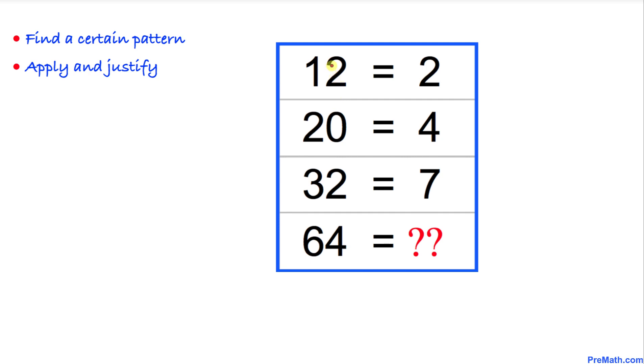So let's look at the very first row on the top. 12 could be written as 4 times 3, 20 could be written as 4 times 5, 32 could be written as 4 times 8, and finally 64 could be written as 4 times 16.